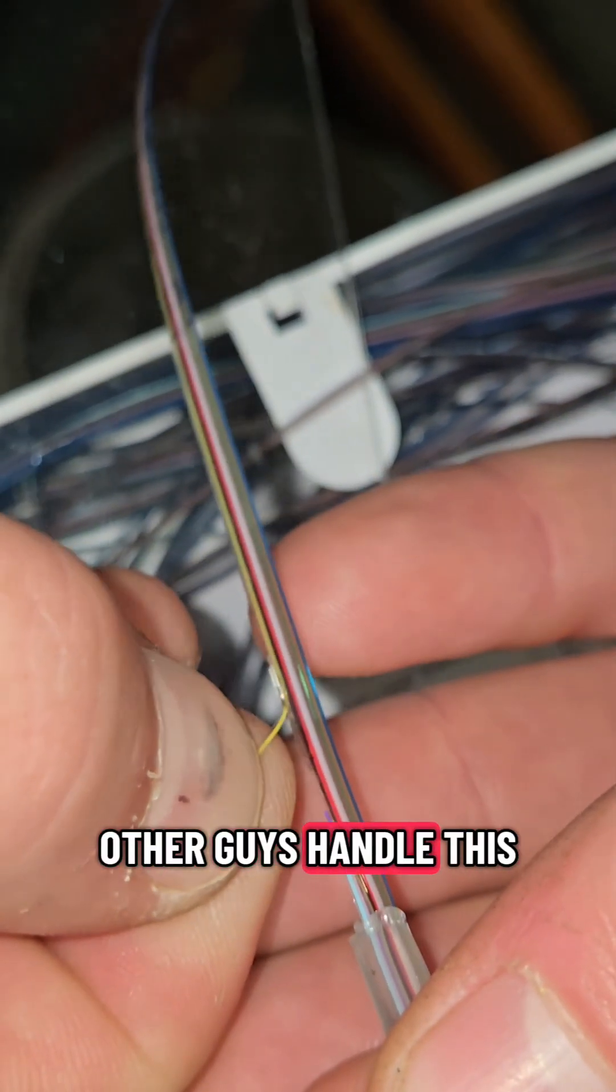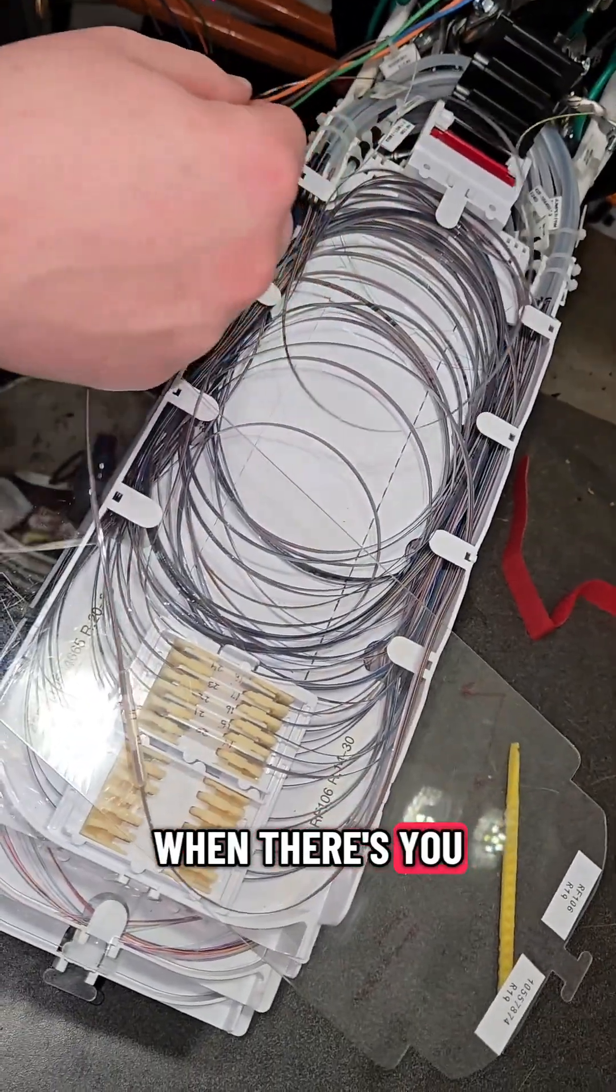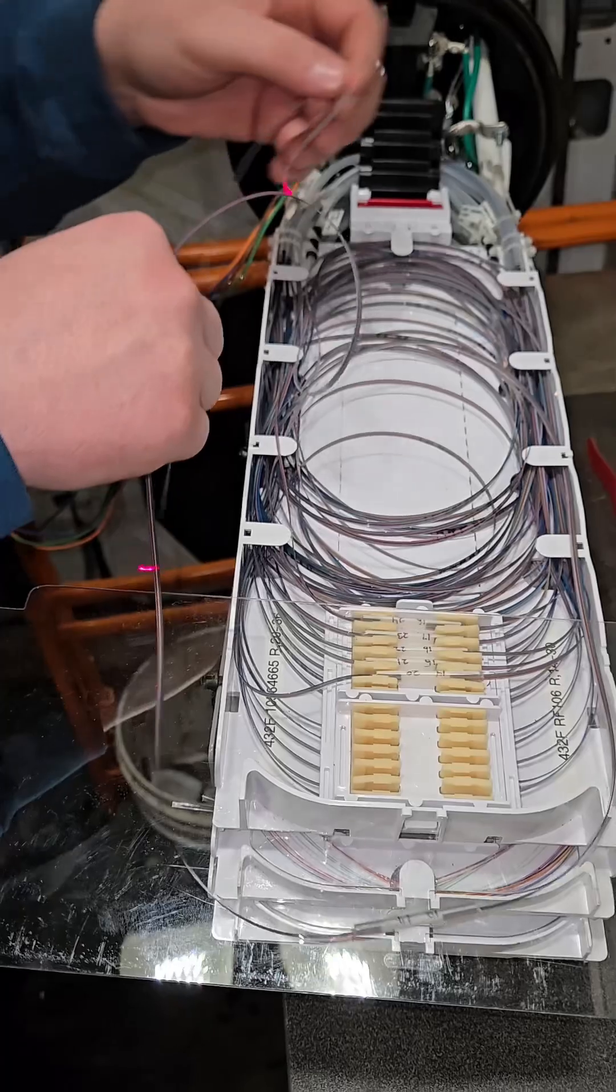I would love to hear how some of you other guys handle this. How do you guys separate fibers when there's live circuits on them?